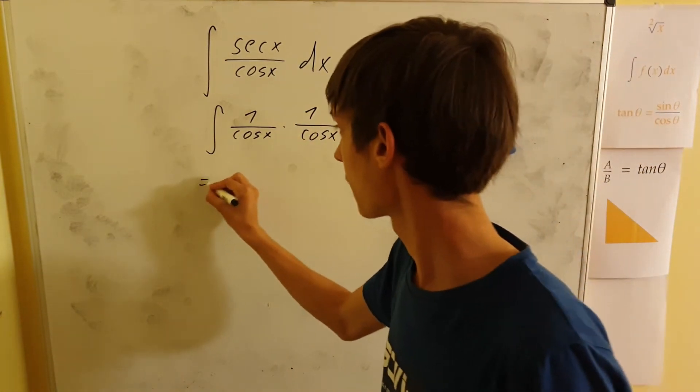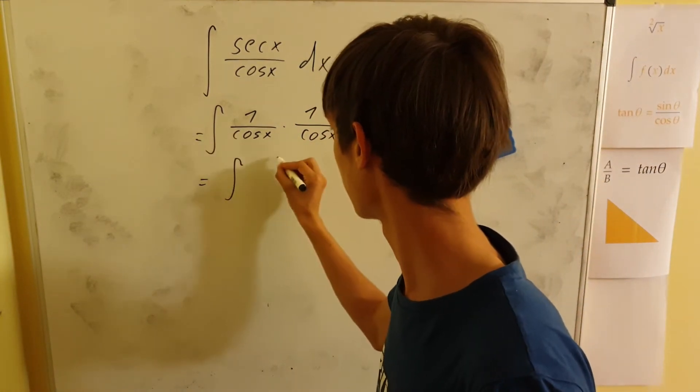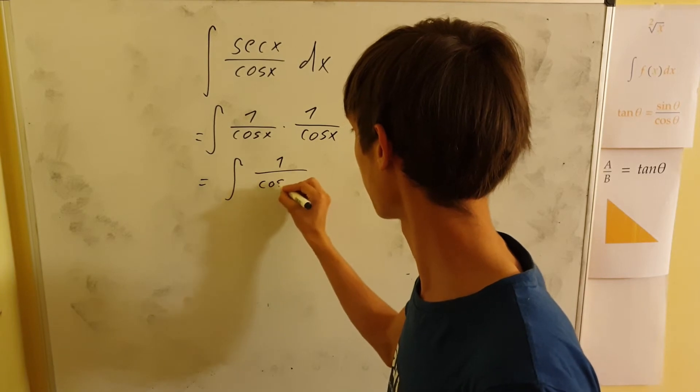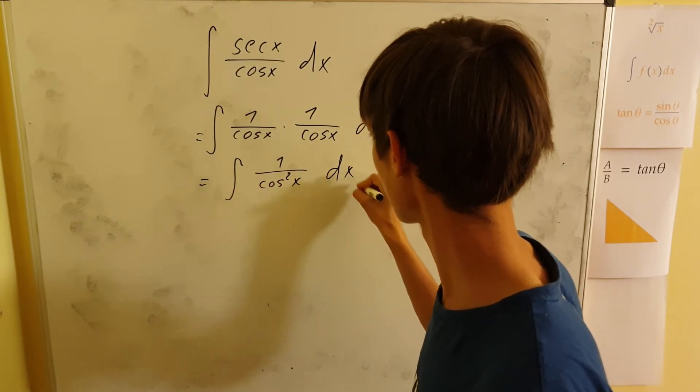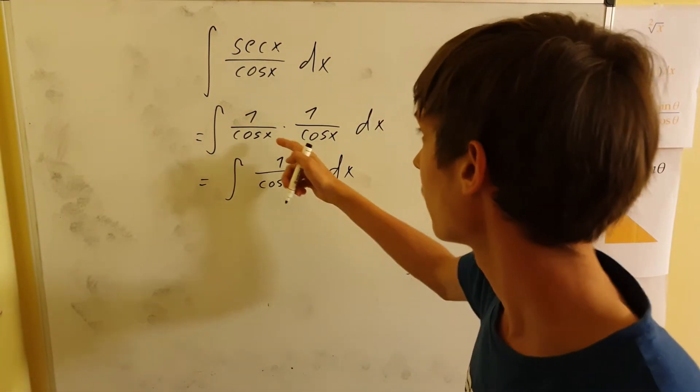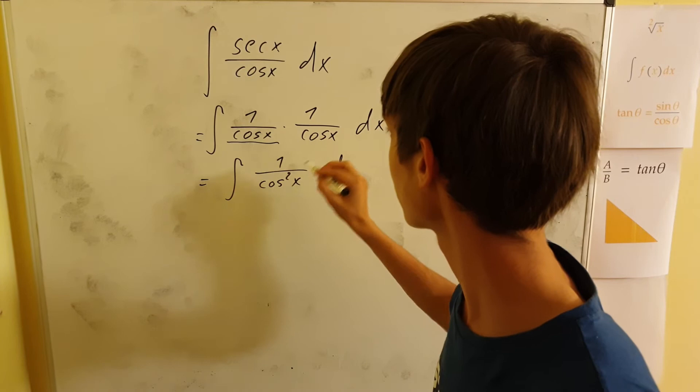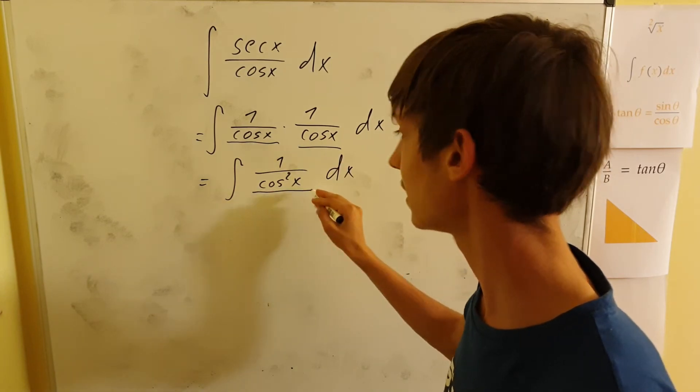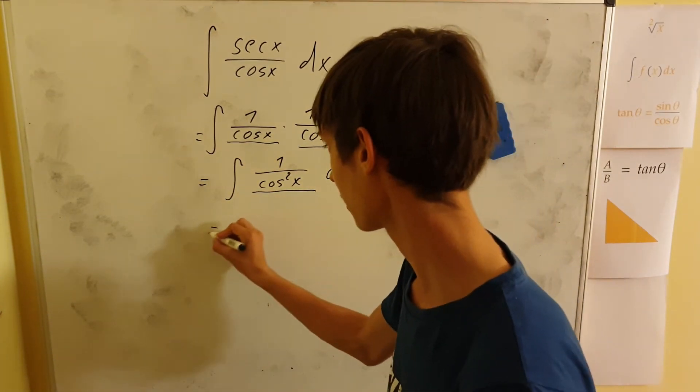This is the same as 1 over cosine squared x. And 1 over cosine squared x is secant squared x, so we can write all this as secant squared x dx.